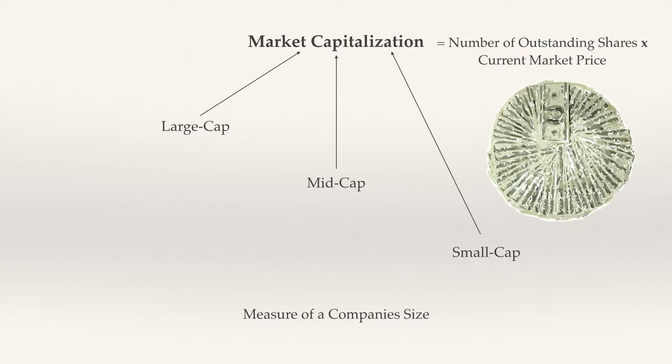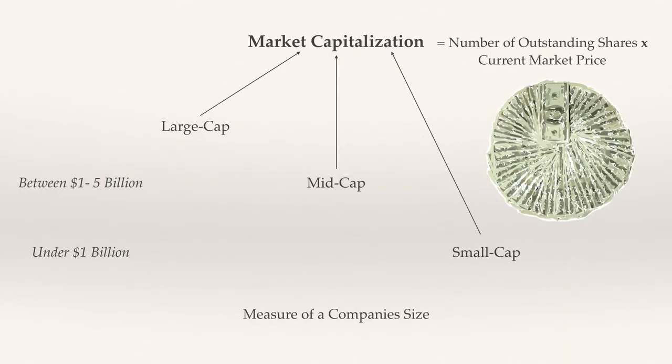The shares outstanding of a company can be found on any financial website, such as Yahoo or Google Finance, and is just meant to represent the company's stock held by all of its shareholders. There's no specific point in order to qualify a company as being a large cap, mid, or small cap. But usually you'll see a small cap company being valued at less than $1 billion, a mid cap company between $1 and $5 billion, and large cap over $5 billion.